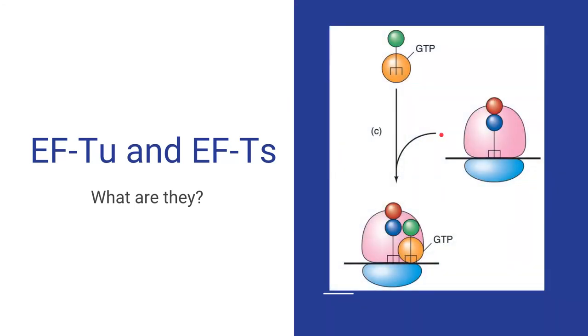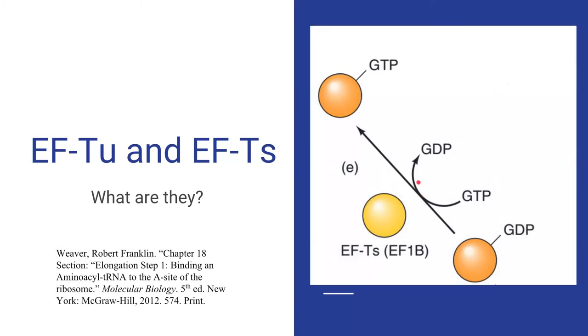This complex binds to a ribosome with the occupied P site and an empty A site. Then, EF-TS allows for the exchange of GDP for GTP on EF-TU to regenerate the binary complex. In short, EF-TS recycles EF-TU so it can function again.